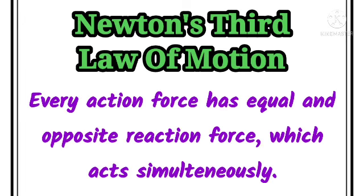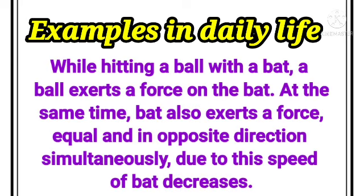Newton's Third Law of Motion: Every action force has an equal and opposite reaction force, which acts simultaneously. Examples in daily life: while hitting a ball with a bat, the ball exerts a force on the bat. At the same time, the bat also exerts a force equal and in the opposite direction simultaneously. Due to this, the speed of the bat decreases.